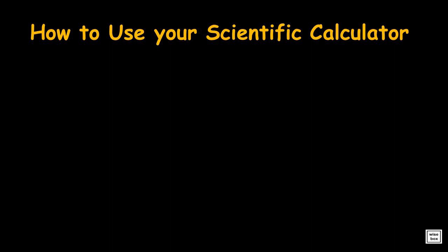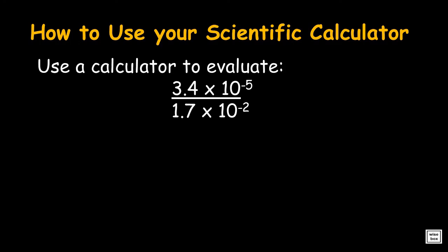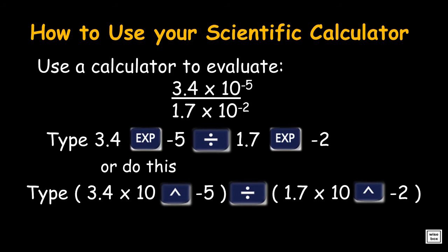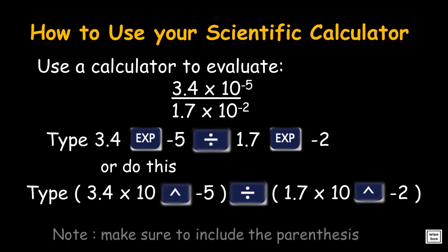Use the scientific calculator to evaluate: 3.4 times 10 to the power minus 5, divided by 1.7 times 10 to the power minus 2. Simply type: 3.4, then the EXP key, then minus 5, then the division key, then 1.7, then the EXP key, then minus 2. You may also do this: type an open parenthesis, then 3.4 times 10, then the caret key, then minus 5, close parenthesis, then the division key, then open parenthesis, then 1.7 times 10, then the caret key, then minus 2, close parenthesis. Take note: in this case, make sure to always include the parentheses. The answer is 2.0 times 10 to the power minus 3.